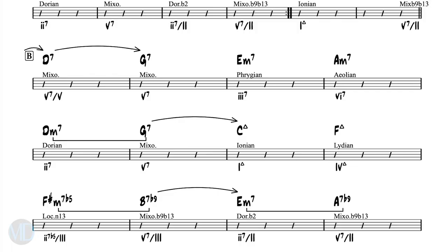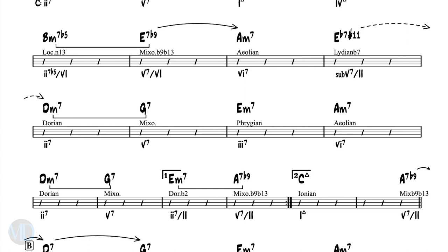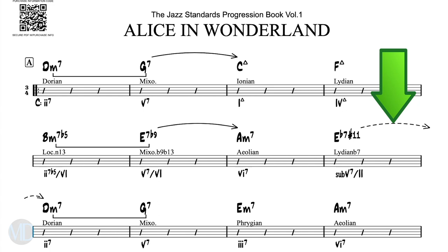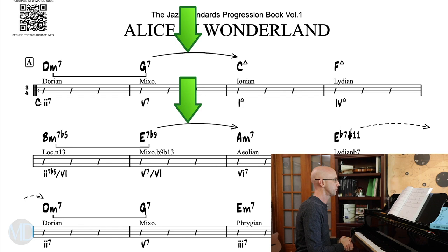The cool thing about our Jazz Standards Progression Book is we have all this information already encoded into the chart. So anywhere you see a dotted line, a dotted arrow, those are indications of sub five. And when you see the solid arrows in the chart, that's just indicative of a dominant chord either going to a tonic chord or tonicizing another chord. So you get this 5-1 dominant to tonic sound.